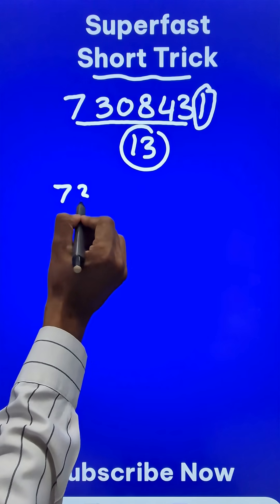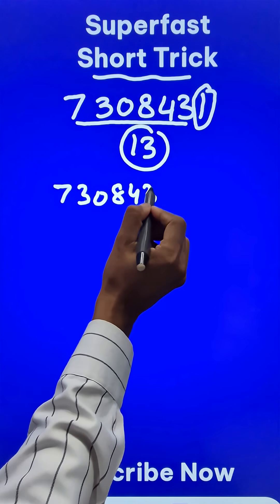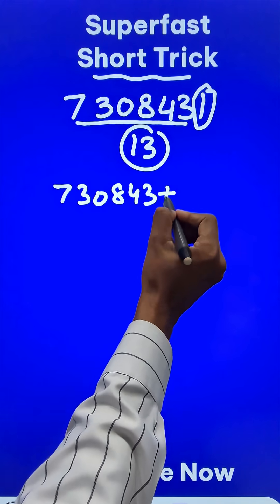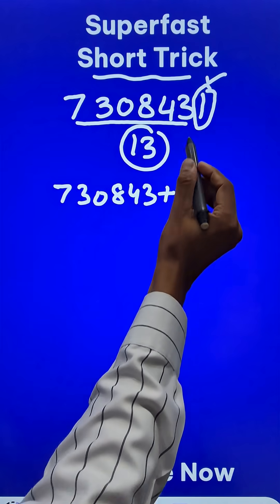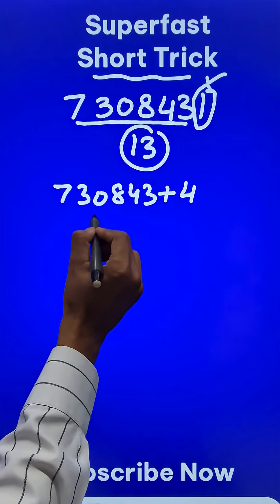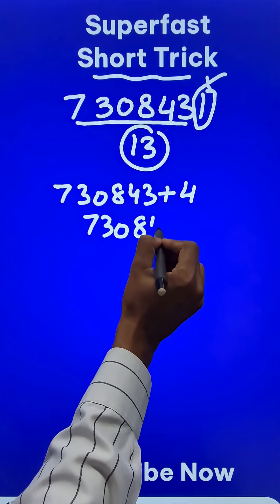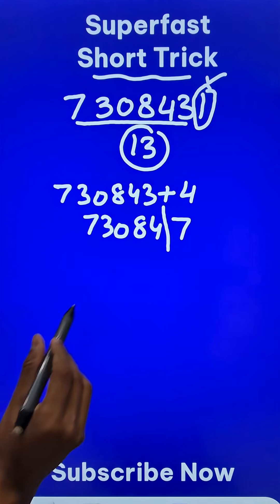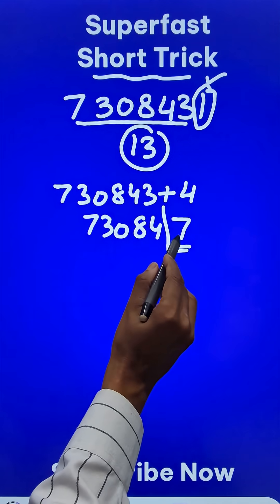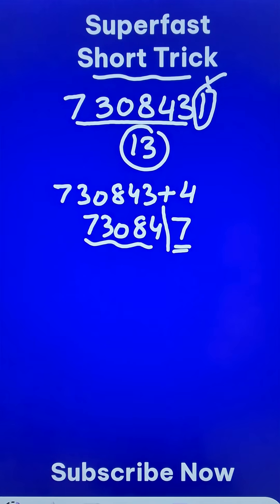So 730843 and I will add to this four times the last digit. So 4 into 1 is 4, right? So if I add 4, I will get 730847. Likewise, keep on doing like this. Last digit is to be multiplied by 4 and added to the remaining number.